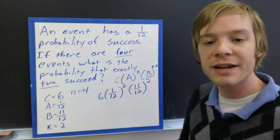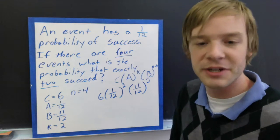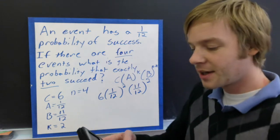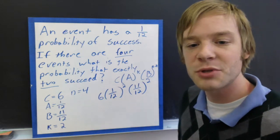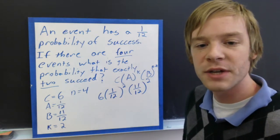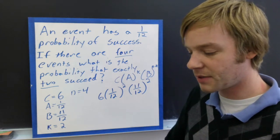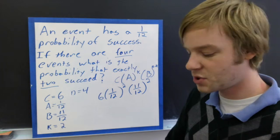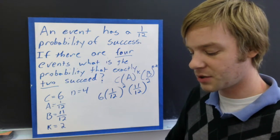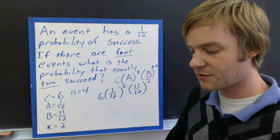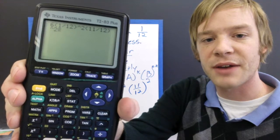Now this right here, I can type in exactly like that into my calculator. I'm going to use my favorite calculator, the TI-83. And the fractions, I'm just going to have as division. So I'm going to start off with 6, parentheses 1 divided by 12 to the power of 2, parentheses 11 divided by 12, also to the power of 2. For those of you following along with the calculator, it should look something like that right there.